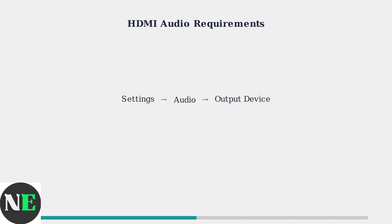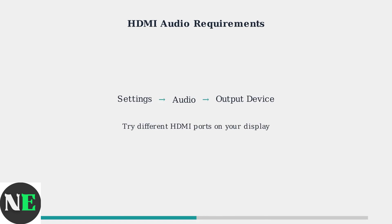Test different HDMI ports on your display or TV, as some ports may have better audio compatibility than others. Then navigate to Settings, Audio, Output Device to select HDMI audio when docked.